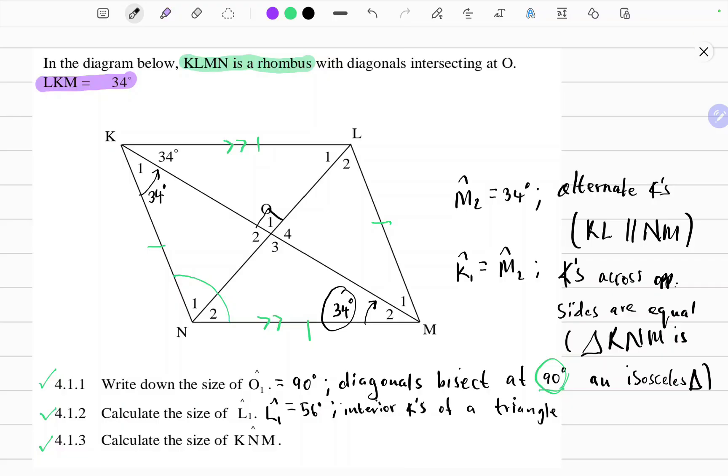So we have a case where we have two known angles and an unknown angle in isosceles triangle KNM. So we can use the property of sum of interior angles of a triangle. So we can say angle K1 plus angle N plus angle M2 equals 180 degrees. And the reason is interior angles of a triangle.